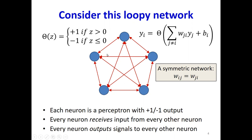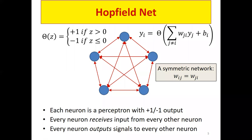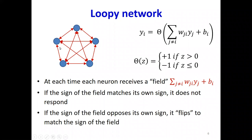This network is what is called a Hopfield network. Here's how this network would operate. Consider any particular neuron — it would receive a weighted combination of the outputs of all of the other neurons plus a bias, which is this affine combination we're seeing. This is what we will call the field at the neuron. It is the total influence of all the other neurons at this neuron.